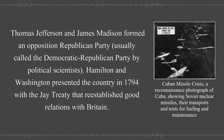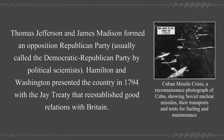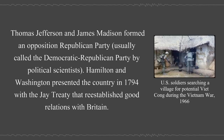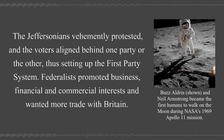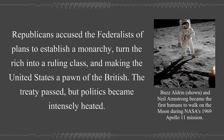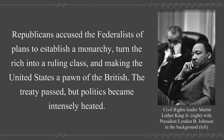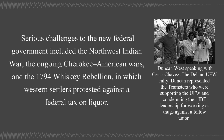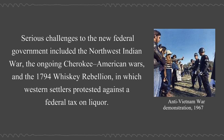Thomas Jefferson and James Madison formed an opposition Republican Party, usually called the Democratic-Republican Party by political scientists. Hamilton and Washington presented the country in 1794 with the Jay Treaty that re-established good relations with Britain. The Jeffersonians vehemently protested, and voters aligned behind one party or the other, setting up the first party system. Federalists promoted business, financial, and commercial interests and wanted more trade with Britain. Republicans accused the Federalists of plans to establish a monarchy, turn the rich into a ruling class, and make the United States a pawn of the British. The treaty passed, but politics became intensely heated. Serious challenges to the new federal government included the Northwest Indian War, the ongoing Cherokee-American wars, and the 1794 Whiskey Rebellion, in which western settlers protested against a federal tax on liquor.